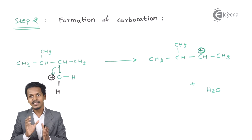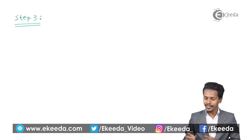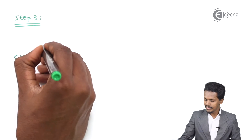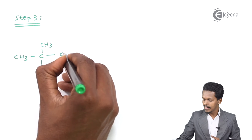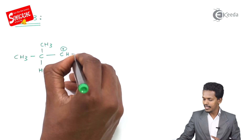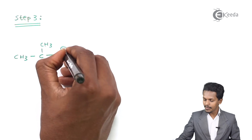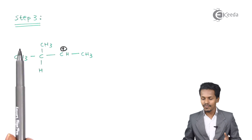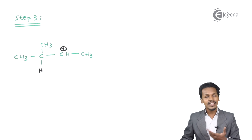The carbocation formed in step 2 will be used in step 3 to obtain the main product. The product from step 2 is CH3-CH+-CH(CH3)-CH3, where there is a positive charge on the carbon atom. As you can see, this is a secondary carbocation. It has been found that a tertiary carbocation is much more stable than a secondary carbocation.